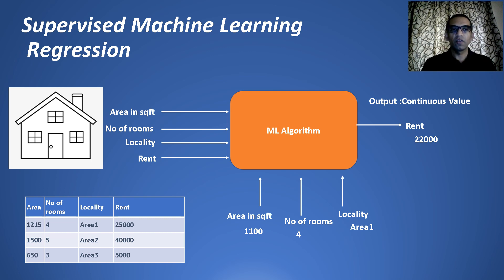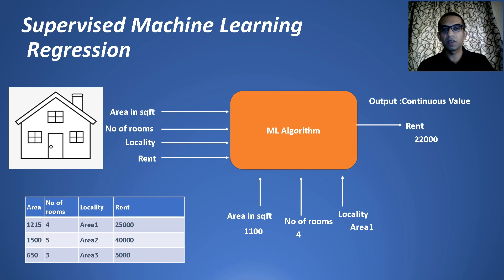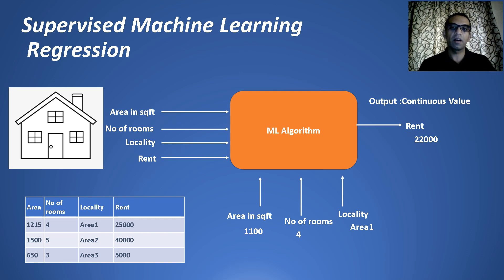Another example of supervised machine learning is predicting the rent of an apartment. You have variables like area in square feet, number of rooms, and locality in a city, and you also know the actual rent. With a large collected dataset like this, you can develop a regression algorithm that predicts a continuous target variable — in this case, rent. Unlike classification where values are discrete, here rent can vary anywhere between 500 to 100K. When you give a new input of area, rooms, and locality, it predicts the rent — this is also supervised learning.